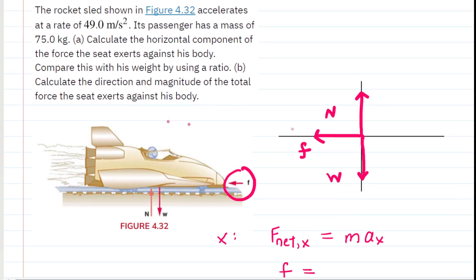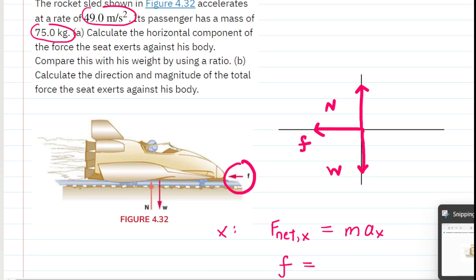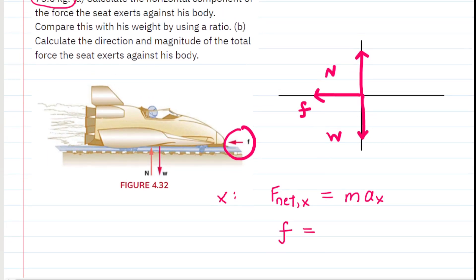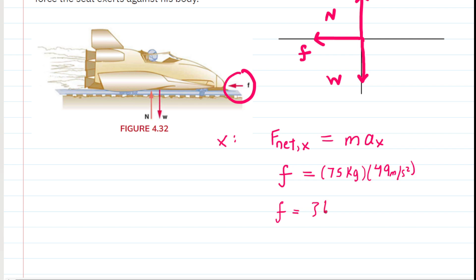The mass of the driver is given as 75 kilograms, and his acceleration in the horizontal direction is given as 49 meters per second squared. Plugging those values in, the horizontal force F equals 3,675 newtons. This is the first correct answer for part A.